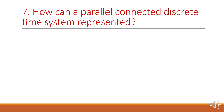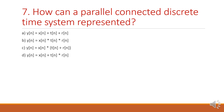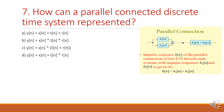Next question: how can a parallel connected discrete time system be represented? When the systems are connected in parallel, we write the sum of the responses, that is the sum of its functions. Y of n equals X of n plus T of n plus R of n. Option A is the right answer. When systems are connected in series, write in terms of convolution; when connected in parallel, write in terms of addition.